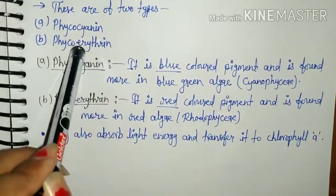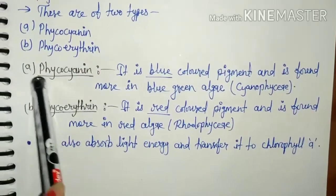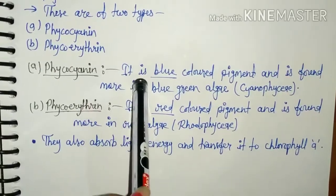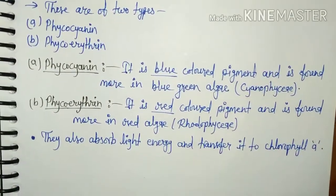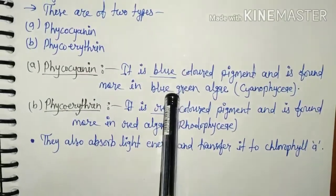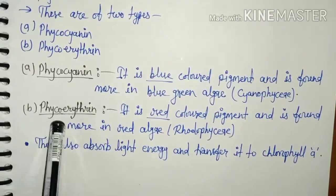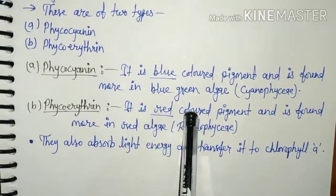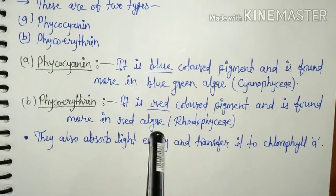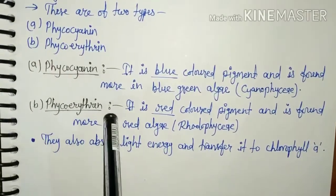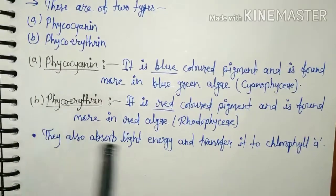Phycocyanin is a blue color pigment found more in blue-green algae, meaning in Cyanophyceae. The blue color of Cyanophyceae is due to the presence of phycocyanin pigment. The second type is phycoerythrin, which is a red color pigment found more in red algae or Rhodophyceae. The red color of Rhodophyceae is due to phycoerythrin. Both phycobilins also absorb light energy and transfer it to chlorophyll A.